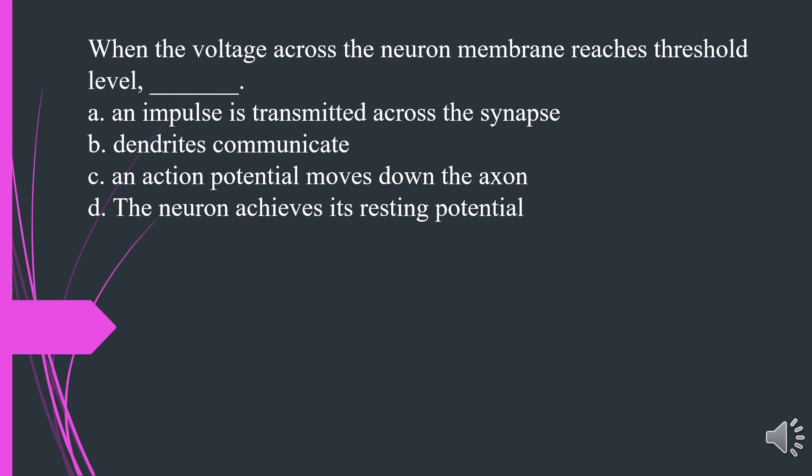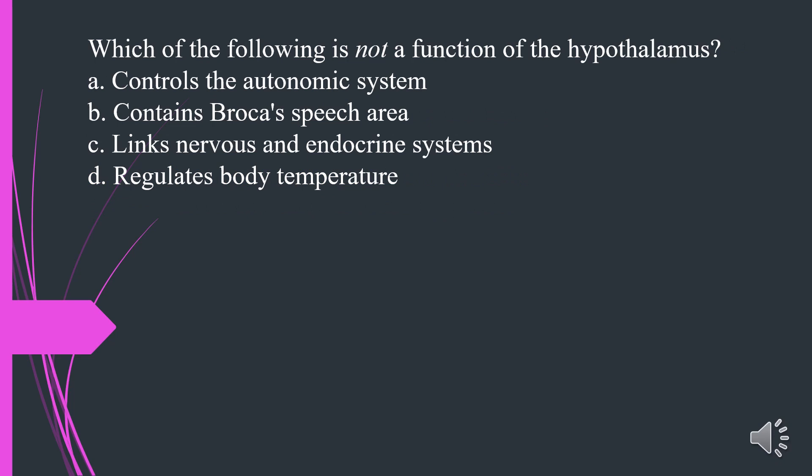When the voltage across the neuron membrane reaches threshold level: A. An impulse is transmitted across the synapse. B. Dendrites communicate. C. An action potential moves down the axon. D. The neuron achieves its resting potential. The answer is C. An action potential moves down the axon.